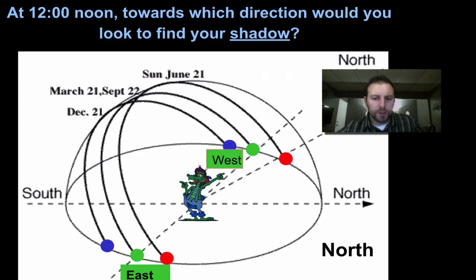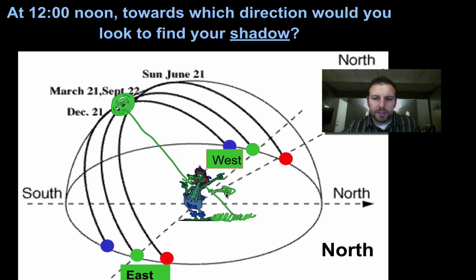At 12 noon, remember our noon positions, noon right here. It's the average of all three of those. Which direction would you look to find your shadow? Remember, the sun comes down, hits the little alligator friend, creates a shadow. There's my shadow. So he would actually have to look in this direction, which is north, to find his shadow.